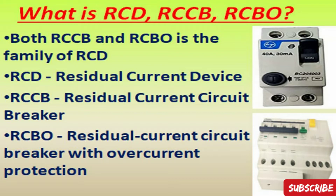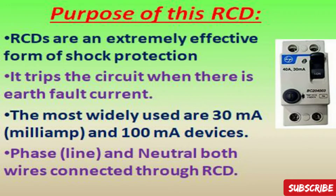RCDs are an extremely effective form of shock protection. They trip the circuit when there is an earth fault current in the load system. The most widely used RCCB ratings are 30 milliamps, which is used for human protection, and 100 milliamps, which is used for equipment protection.